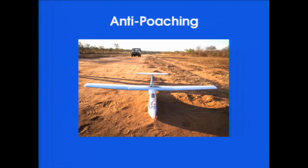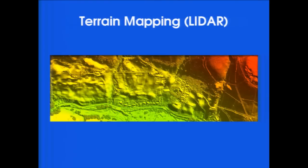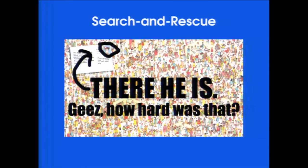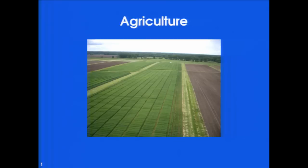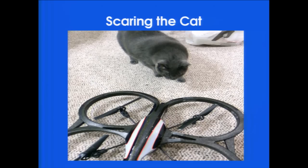Anti-poaching: flying around in Africa looking for rhino poachers to inform the authorities about where they are. Terrain mapping — a particular type of aerial photography called LiDAR — gives you a very accurate topographical map of any region. Search and rescue: you could swarm a bunch of these in a forest and search for somebody who's missing. Agriculture for laying down water, seeds, and fertilizer very accurately and cheaply. Or scaring the cat — always my favorite. Our cat Phantom at home: as soon as one of these takes off, he just darts from the room and you don't see him again for three days.